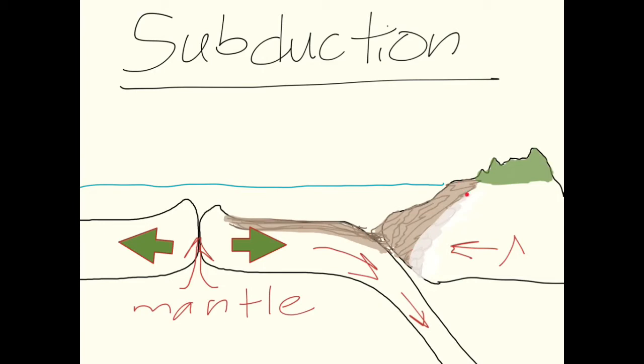And this is called an accretionary wedge. You can see my brown lines here exhibiting the layers in the sedimentary rock. And over here on the continental plate, they are greatly deformed from thrust faults and heat, or just being pushed up against each other.